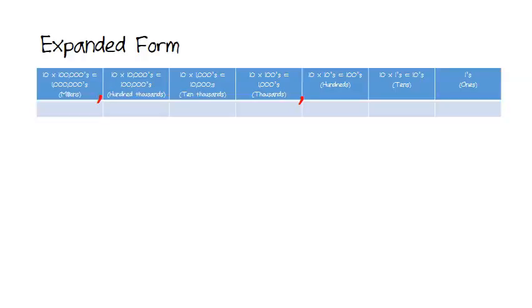Well, expanded form simply is when we write numbers as multiples of 10 times the digits of the number. What does that mean? Well, first we have to go back to our column values. Remember, all of the column values are actually multiples of 10.